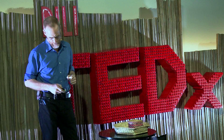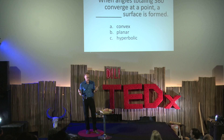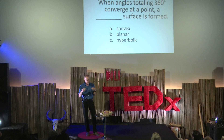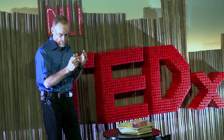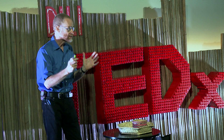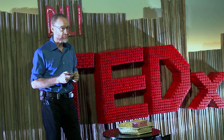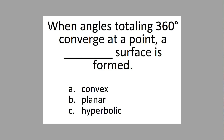Let's go on to geometry. When angles totaling 360 degrees come together at one point, what kind of surface is formed? Convex, planar, or hyperbolic?